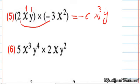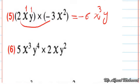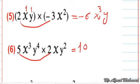It will be y power 1 from the first term, but if we have any letter to the power of 1, we ignore this power, so we write y without the power 1. For the next problem: 5 times 2 equals 10, x power 3 and x power 1 equals x power 4, and y power 4 and y power 2 together equal y to the power of 6.